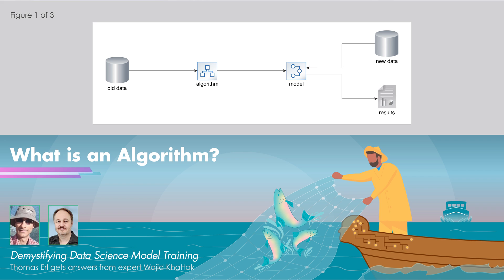So an algorithm exists as a mathematical formula. Who created that formula? Where did it come from? Each breed of machine learning algorithms has its own history.